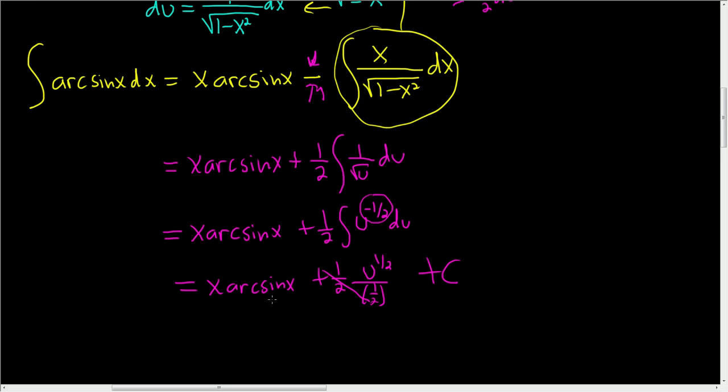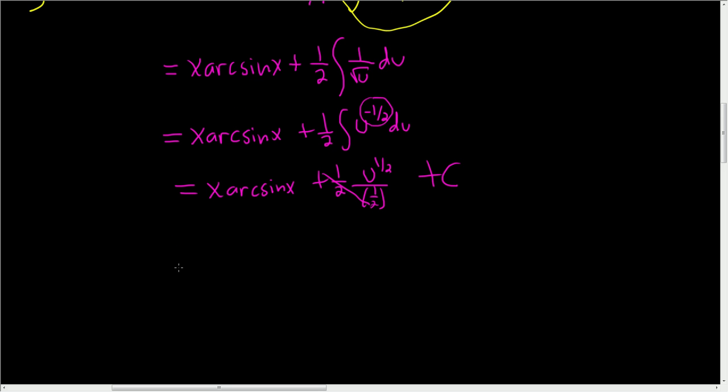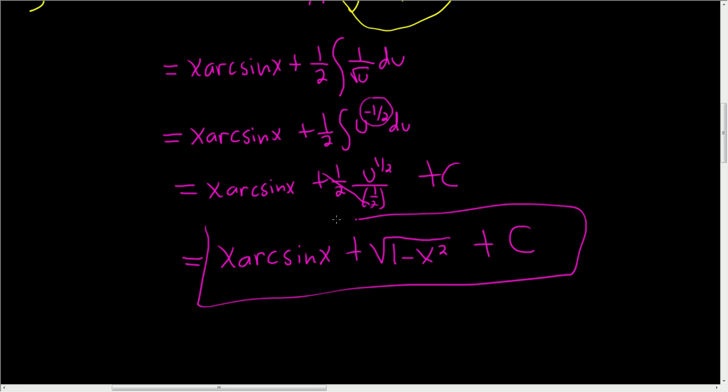These cancel and we're almost done. This equals x arcsine x plus, and then u to the 1 half is the square root of u. So this is the square root of, and u was 1 minus x squared. And then we have plus c. That's the final answer.